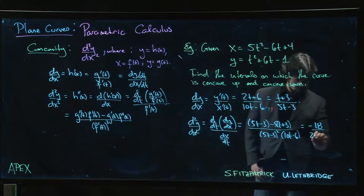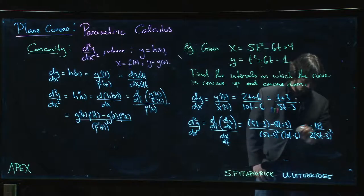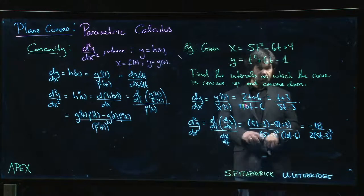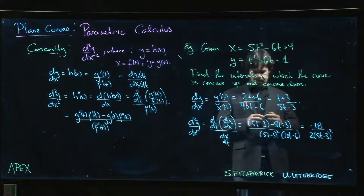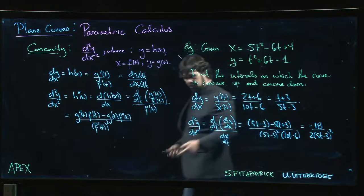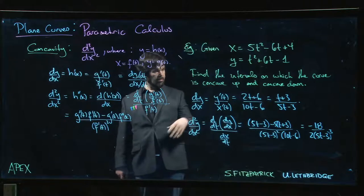We get 5t minus 5t—oh interesting, that actually cancels—and then minus 3 minus 15, we actually get minus 18 over, if we factor out a 2, we have 5t minus 3 cubed. Now that actually tells us something. You might see the 18 on top and think, oh no, the derivative is never zero, second derivative is never zero, we're supposed to find intervals of concave up, concave down.